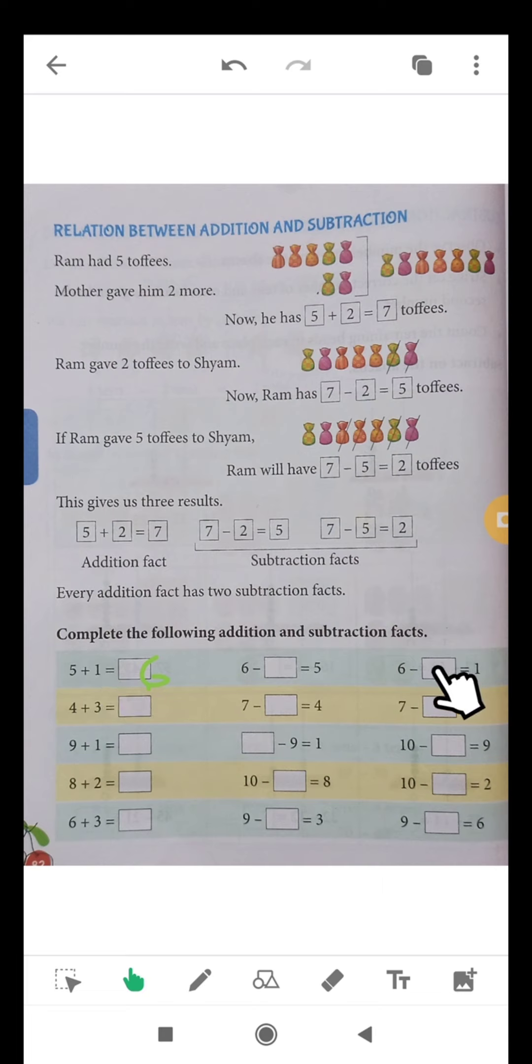5 plus 1 is 6. This is the addition fact. 6 minus 5 is 1. This is the subtraction fact. 6 minus 1 is equal to 5, so write here 5.